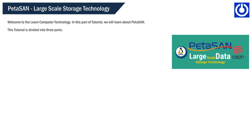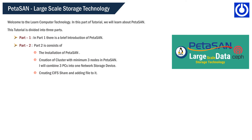This tutorial is divided into three parts. In Part 1, there is a brief introduction of PETA SAN. Part 2 consists of the installation of PETA SAN and creation of a cluster with minimum 3 nodes in PETA SAN. I will combine three PCs into one network storage device, creating CIFS Share and adding files to it.